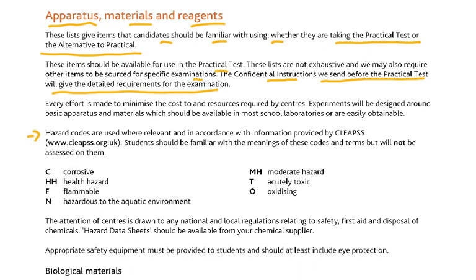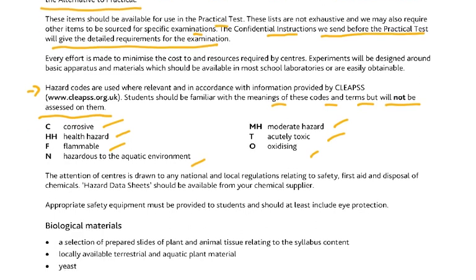Hazard codes are used in accordance with information from CLEAPSS. Students should be familiar with the meaning of these codes but will not be assessed on them. C is corrosive, HH is health hazard, F is flammable, N is hazardous to the aquatic environment, MH is moderate hazard, T is acutely toxic, and O is oxidizing. You will not be examined on these but you must know what they mean if they appear.